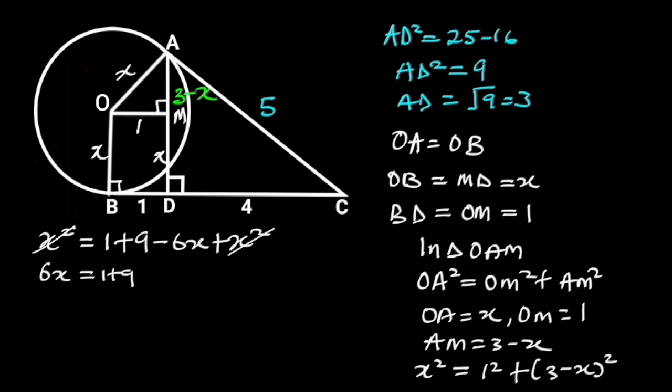1 plus 9 is 10, so 6X is equal to 10. Dividing both sides by 6 will leave us with X is equal to 5 over 3, which is the radius of the circle.